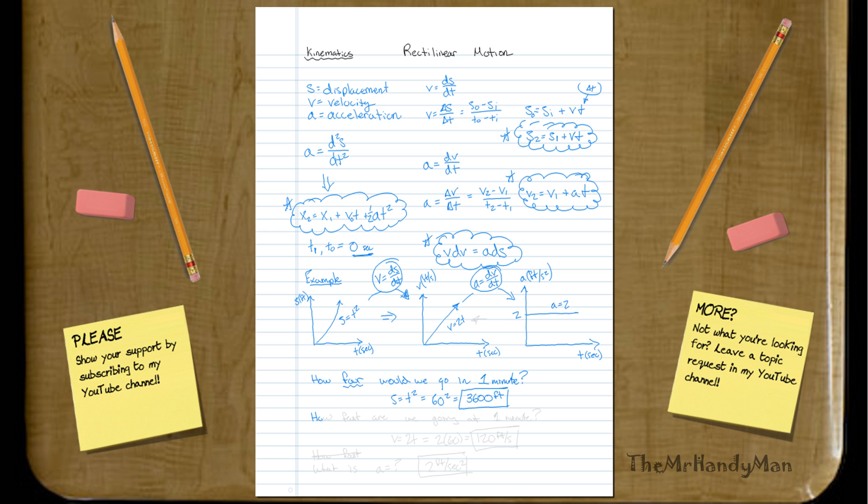Now, you can ask yourself other questions about that time. How fast are we going at one minute? And you just use the equation that you pulled out. So V is equal to 2T equals 2 times 60 equals 120 feet per second. Simple.